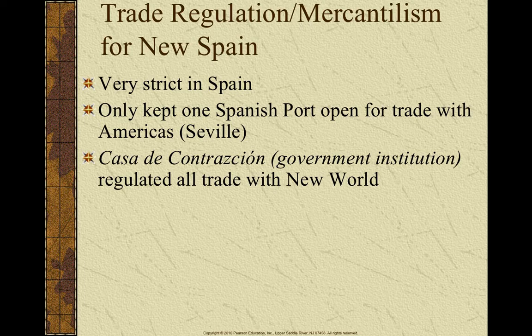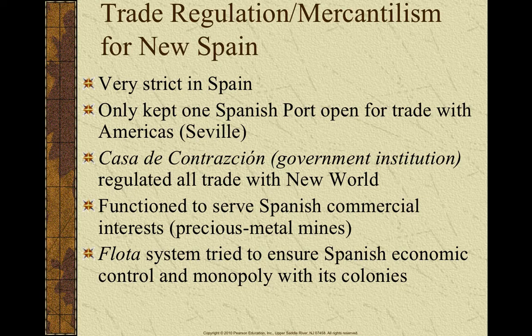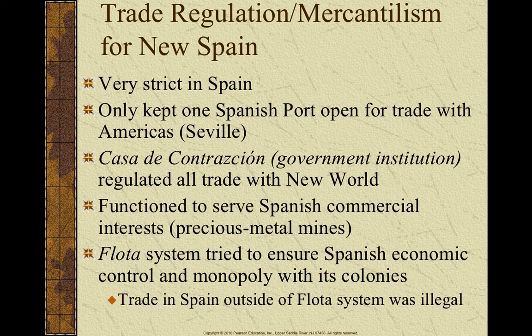Their government institution to help regulate trade was called the Casa de Contratación, which translates to the House of Trade. This Casa functioned to protect and serve Spanish commercial interests — they wanted those precious metals. Another system Spain instituted to control their monopoly and mercantilism within the colonies was the Flota system. This system made any trade outside of the Flota illegal. This is really a prime example of Spain trying to control its economy, making sure its colonies only trade with Spain and Spain only trades with its colonies.